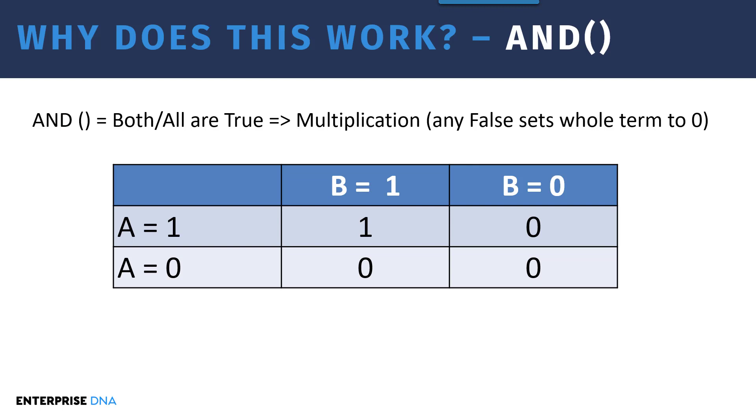If we look here at the AND conditions, AND implies that both or all, if you have more than two, all the conditions are true, and that is characterized by multiplication. So in multiplication, any false sets the whole term to zero, and we can see that here. So if we've got two variables, A and B, if A is true and B is true, then the product is a one and that gets a true. But if either of these is false, either A equals zero or B equals zero, you get one of these three conditions and it sets the whole term to zero. So that's the intersection.